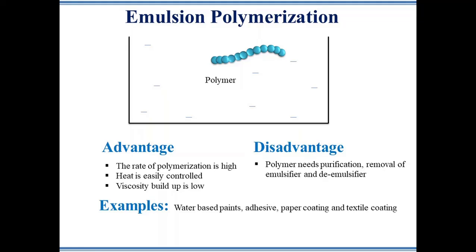Monomers such as vinyl chloride, butadiene, chloroprene, vinyl acetate, and acrylates are polymerized by this technique, which gives water-based paints, adhesives, and coating materials.